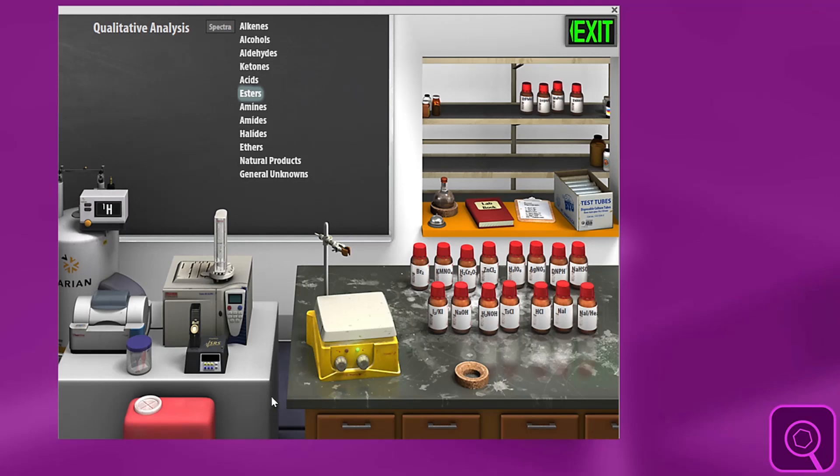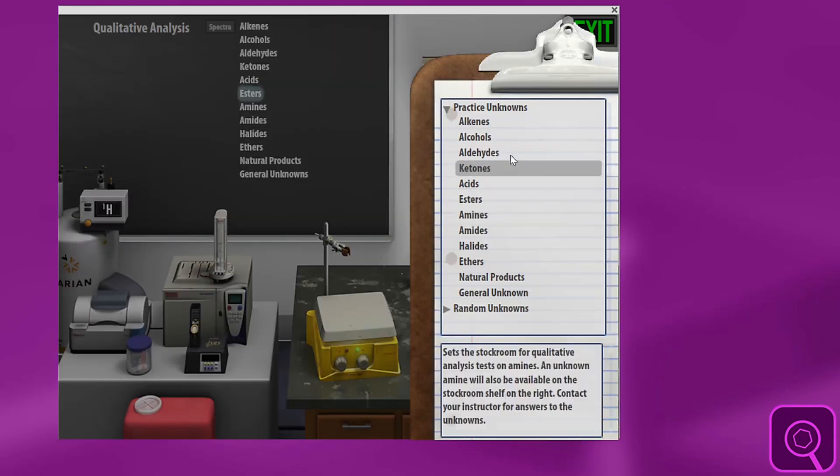Hi, I'm going to show you how to use unknowns in the organic laboratory. There are two basic ways to do it here. The clipboard allows you to pull up practice unknowns and random unknowns.